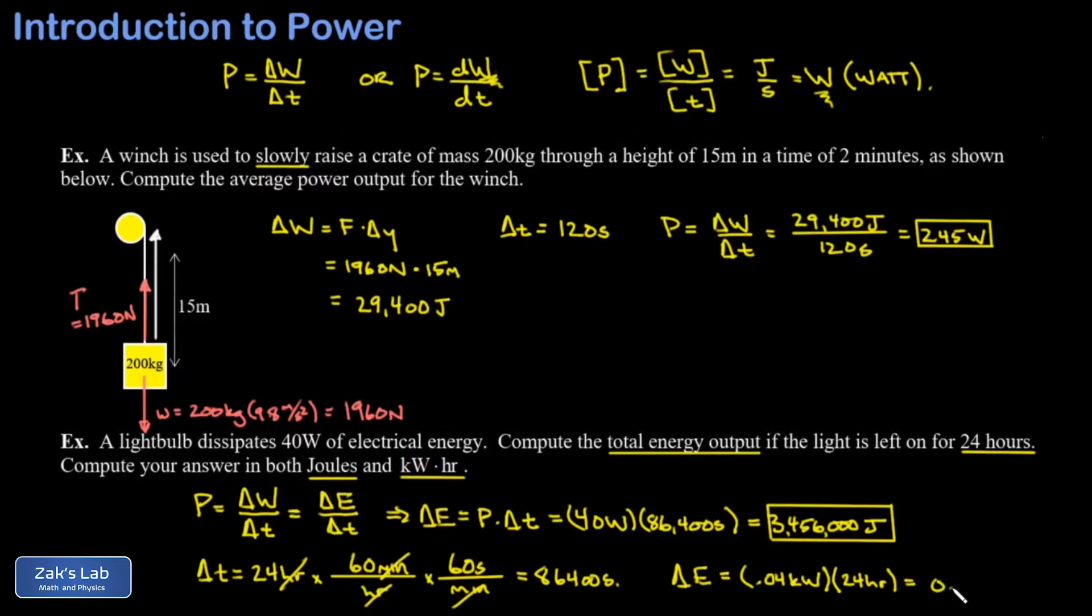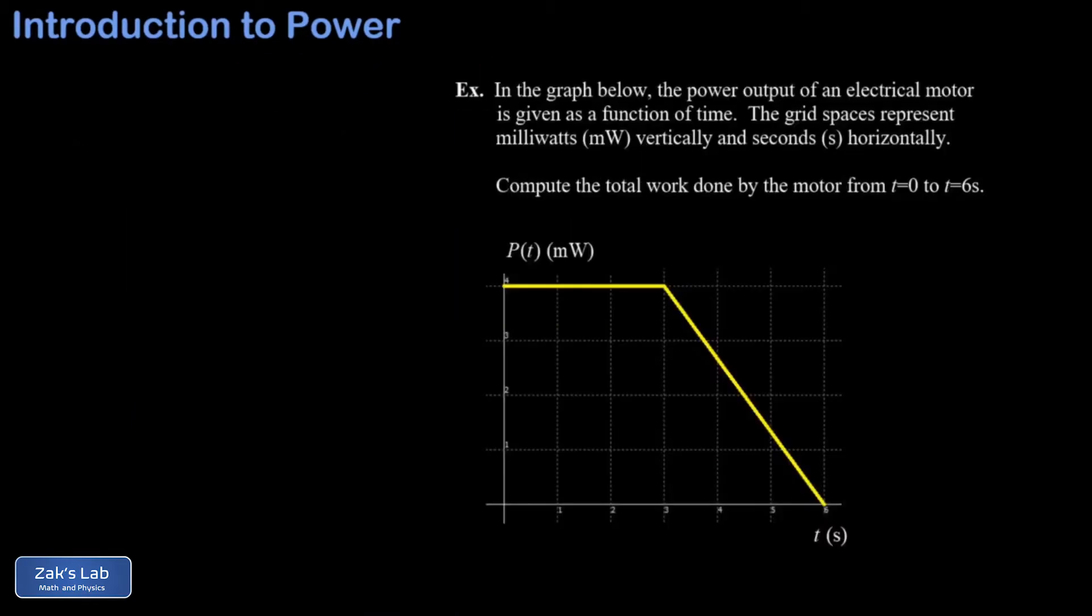This gives me 0.96 kilowatt-hours. I think my electrical company currently charges around 15 cents per kilowatt-hour, so leaving this light on for 24 hours is going to cost me about 15 cents.